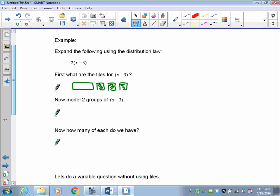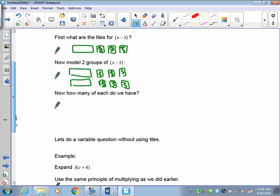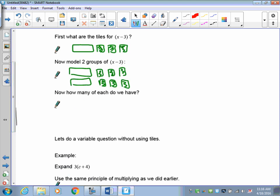All right, now, to model two of these groups, I need to have x and x and negative 3 and negative 3. So there's my two groups of x and two groups of negative 3. So how many do we have? We have 2x minus 6, so we know that 2 onto x minus 3 equals 2x minus 6.